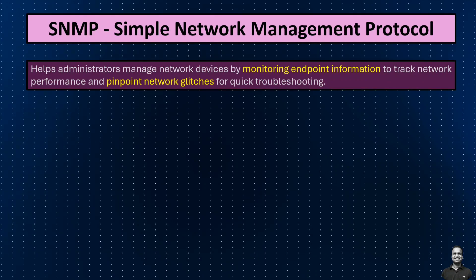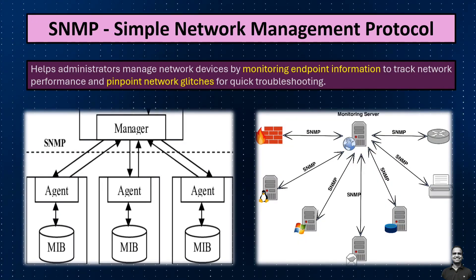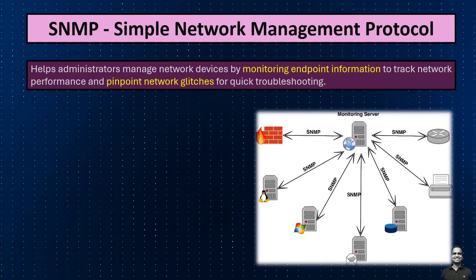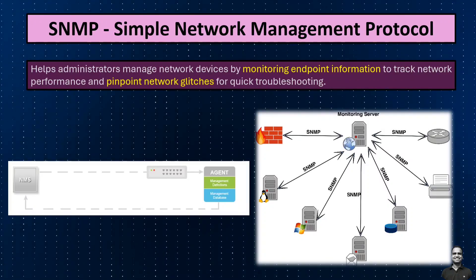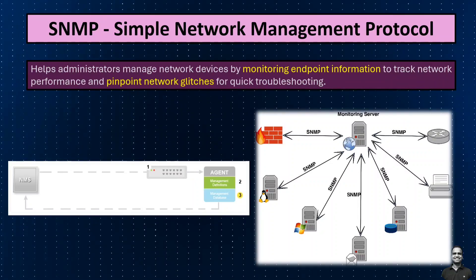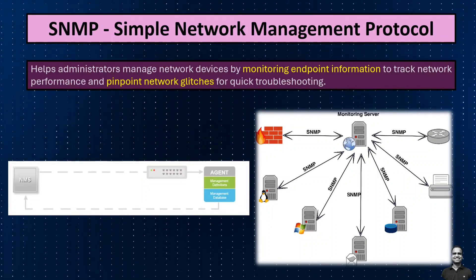For example, imagine a large company with multiple branches across different cities. The network administrator uses SNMP to monitor the health and performance of various network devices like routers, switches, and servers. Through SNMP, the administrator can remotely access these devices, collect data like bandwidth usage and CPU load, and receive alerts about any anomalies. If a router's CPU utilization exceeds a certain threshold or a switch port experiences a high number of errors, SNMP will notify the administrator, allowing them to take proactive measures before it affects network performance.